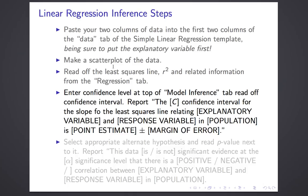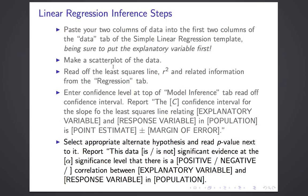Then we'll go to the model inference tab, where we'll enter a confidence level and read off the confidence interval, reported as: 'The C confidence interval for the slope of the least squares line relating the explanatory variable and response variable in the population is point estimate plus or minus margin of error.' We'll select the appropriate alternate hypothesis — no choice about the null hypothesis — and report: 'This data is or is not significant evidence at the alpha significance level that there is a correlation between the explanatory variable and the response variable in the population.' For a one-tailed alternative, you'd specify positive or negative correlation.